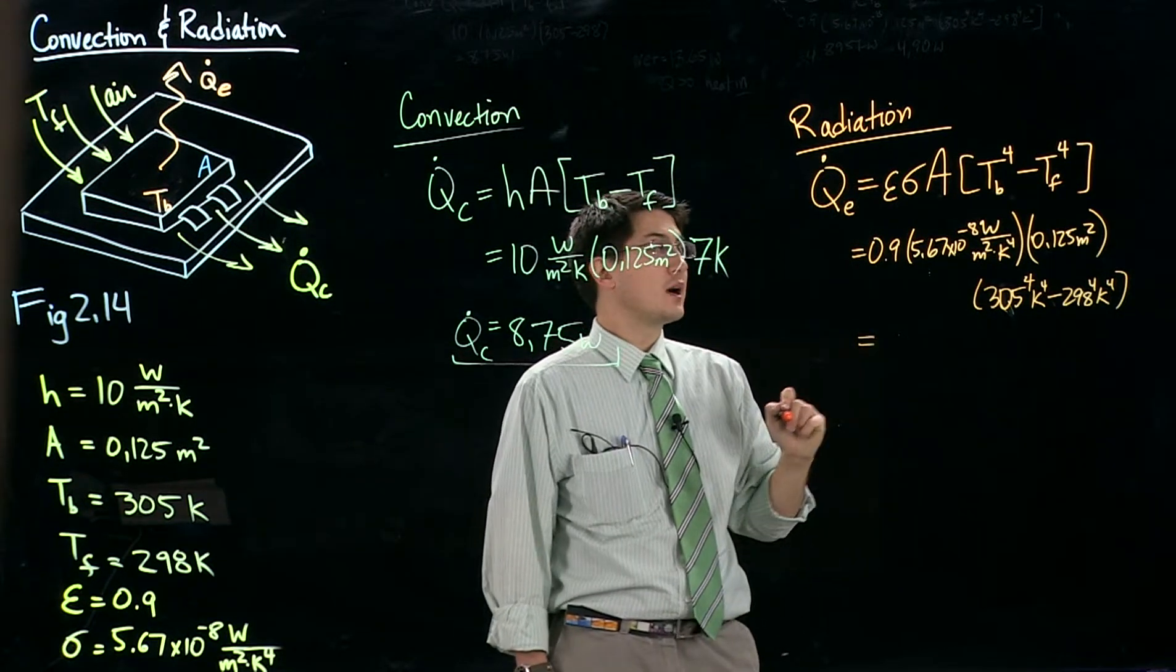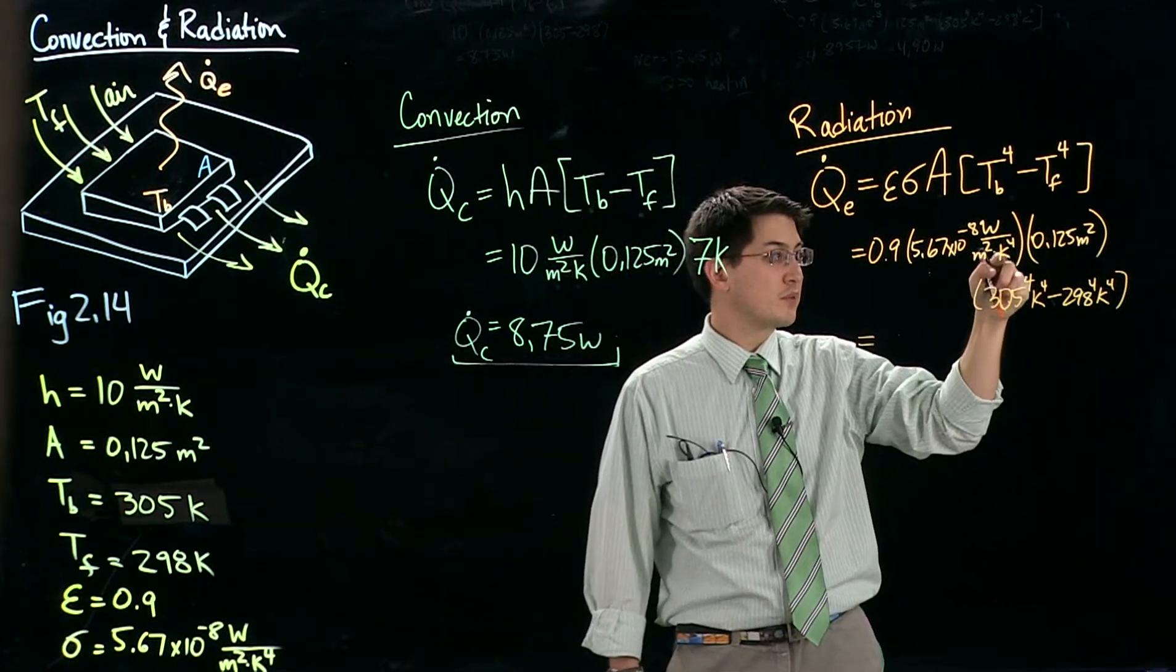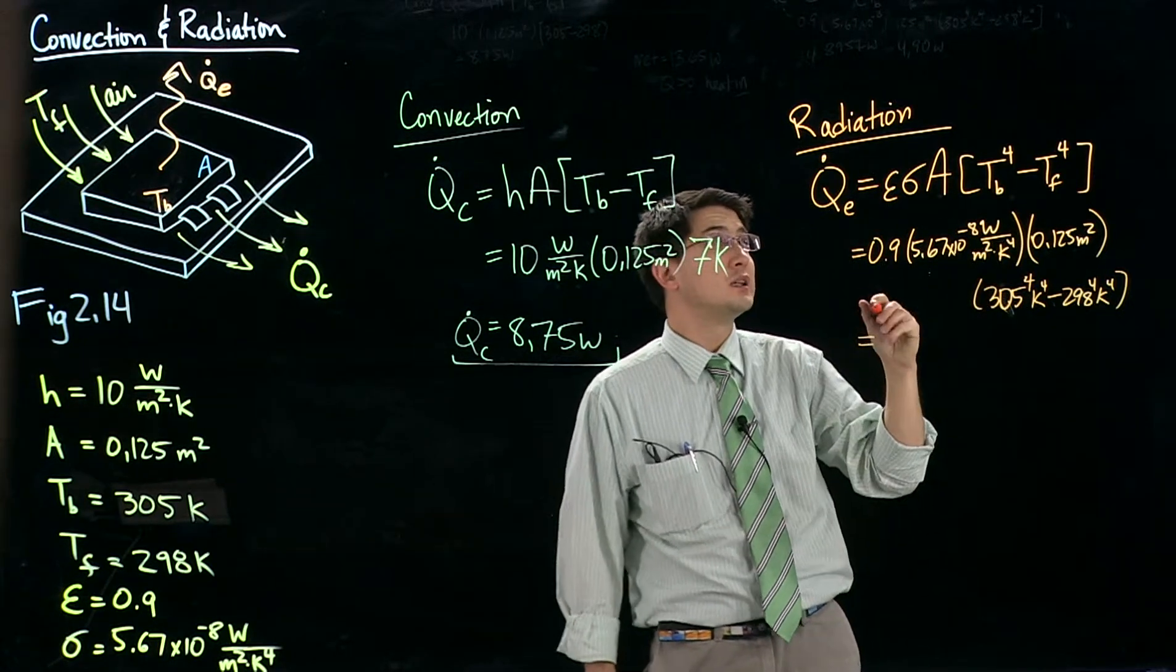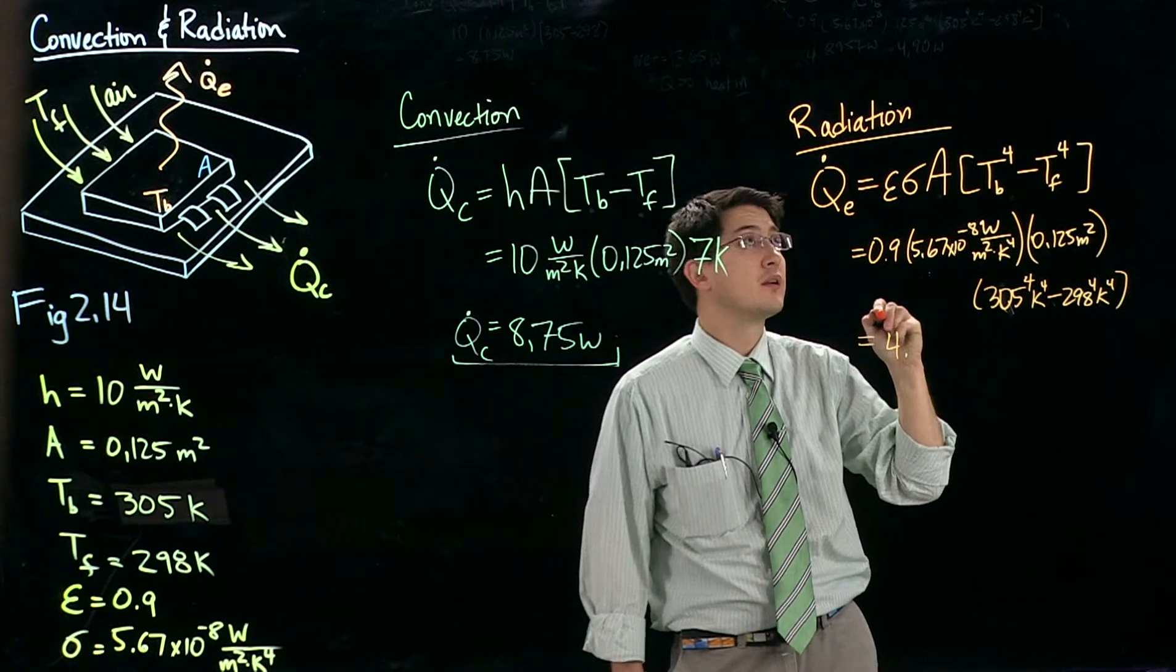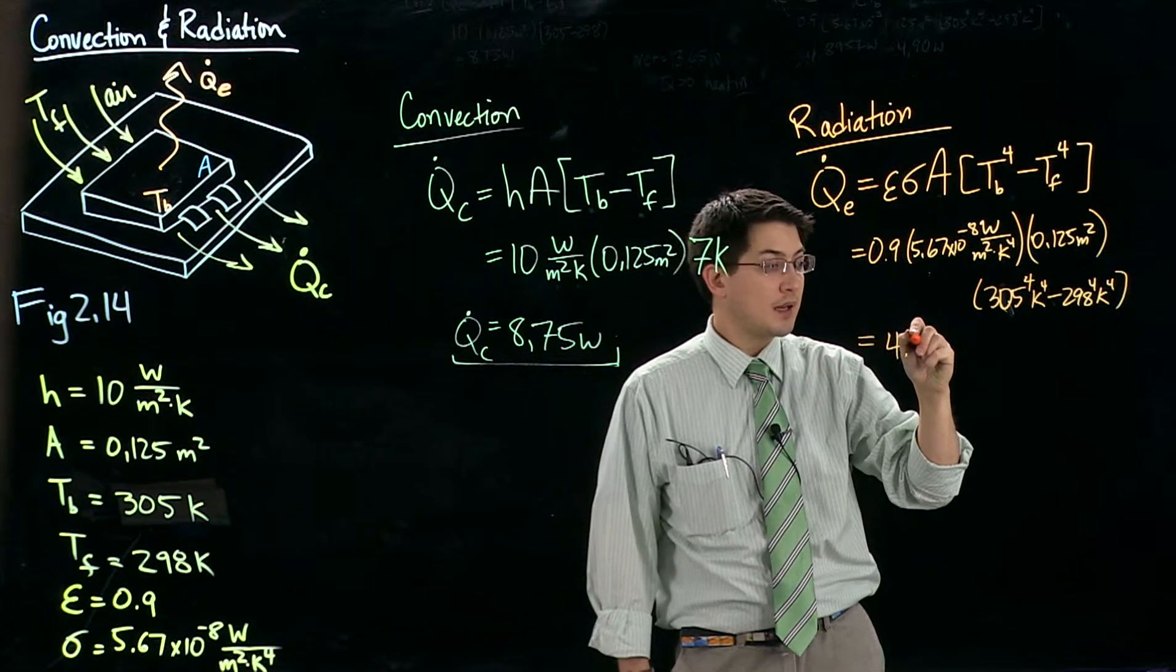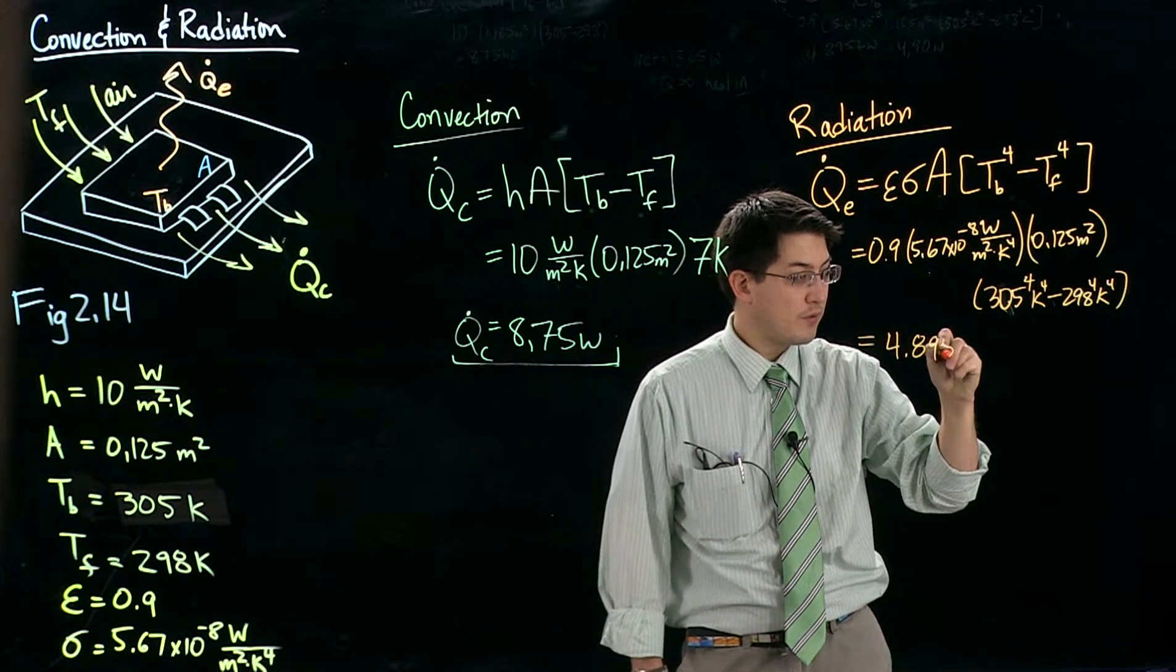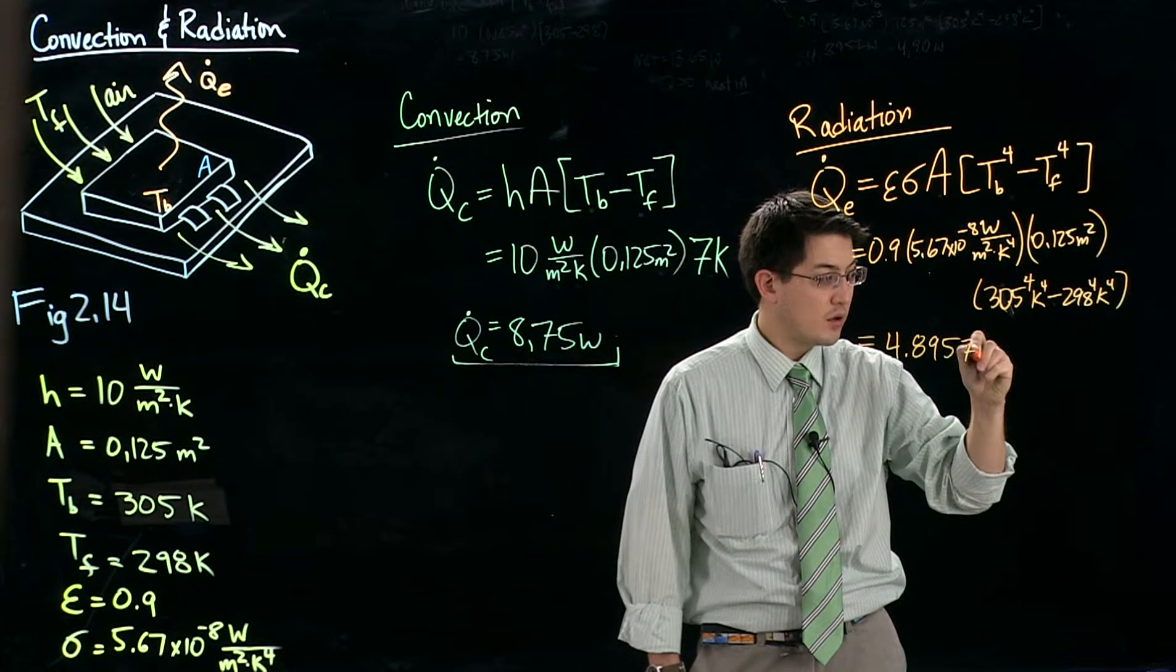Work this out. Meter squared, meter squared cancel. Kelvin to the fourth cancels, giving us watts. This will be 4.8957 watts.